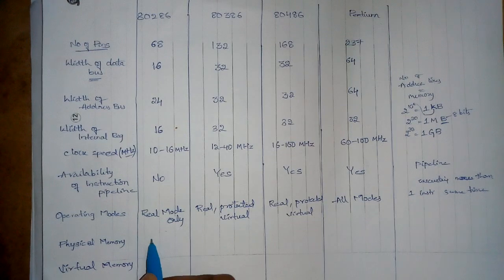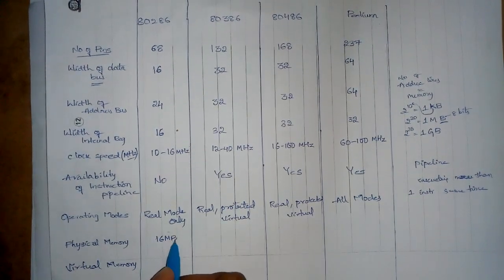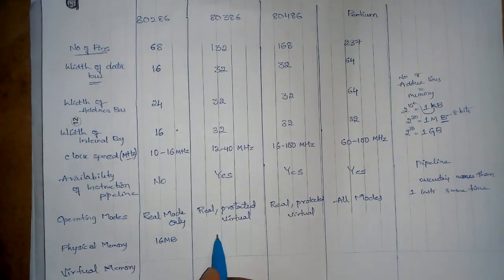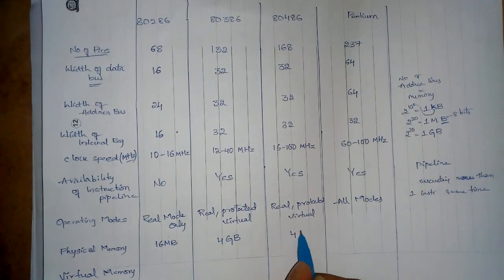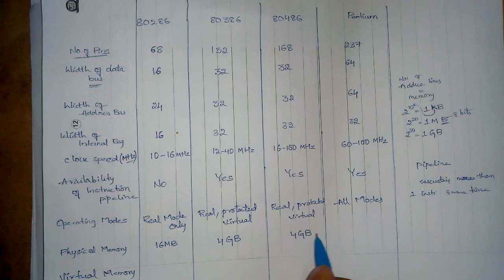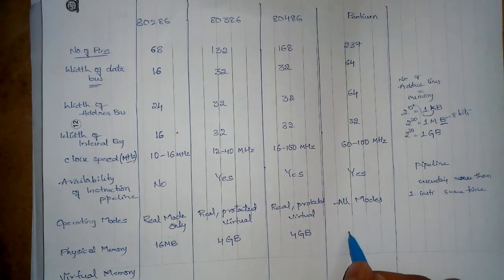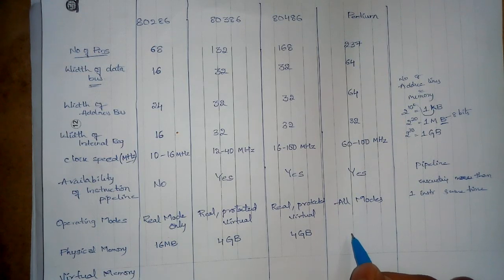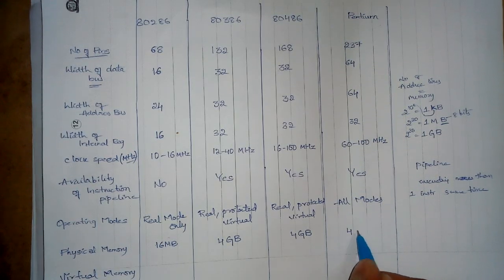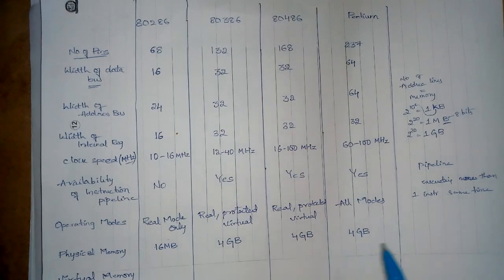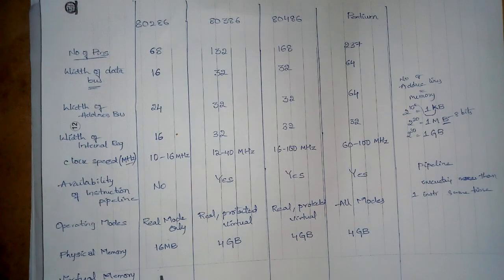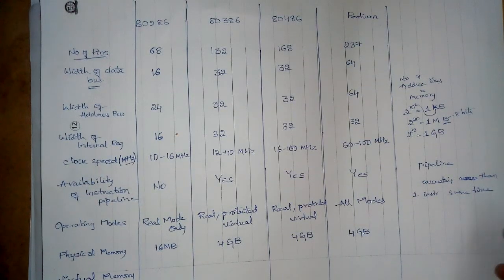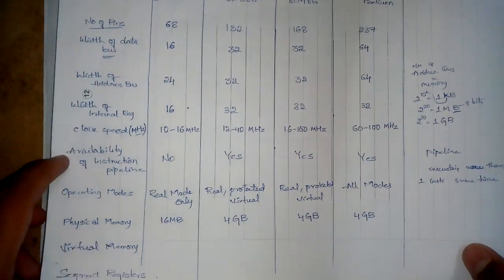For physical memory size: the 80286 has a physical memory size of 16 MB. The 80386 has 4 GB, the 80486 is also 4 GB, and the Pentium processor also has 4 GB.